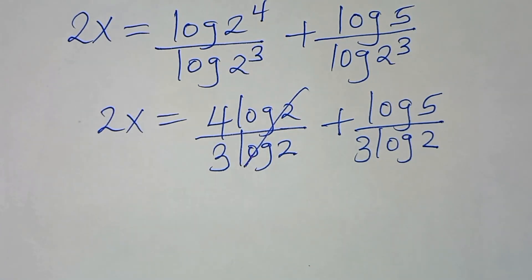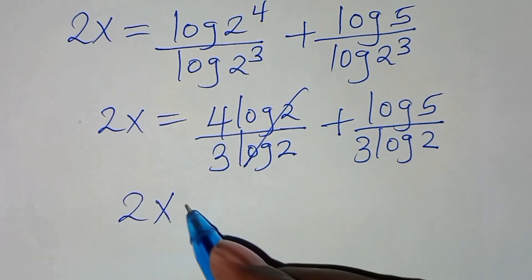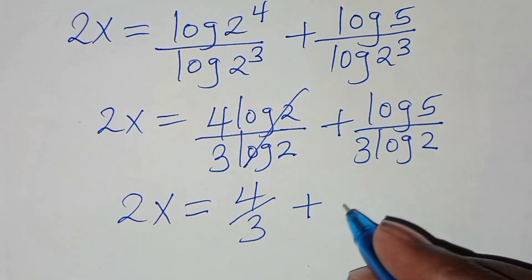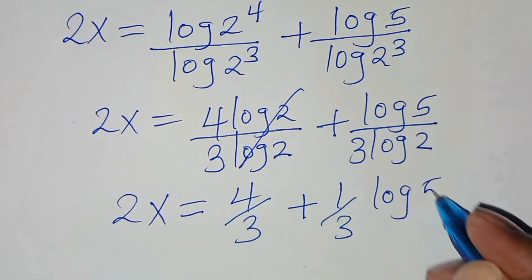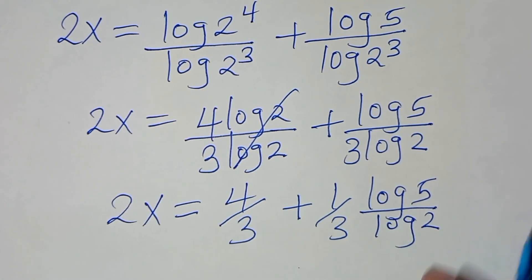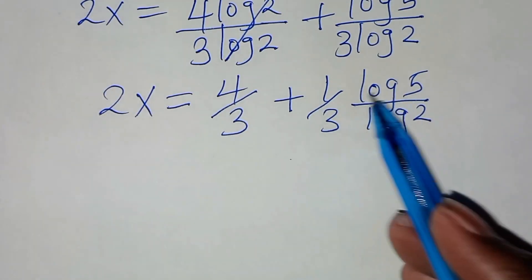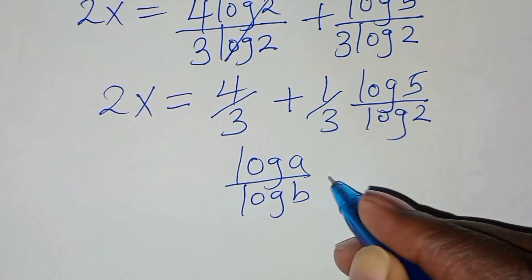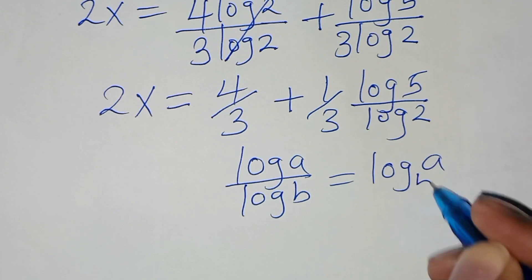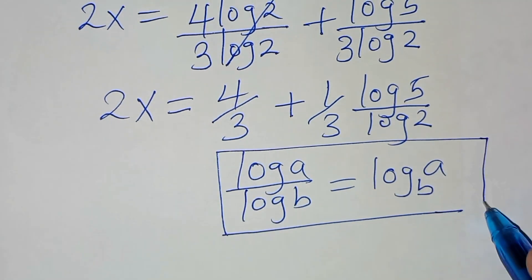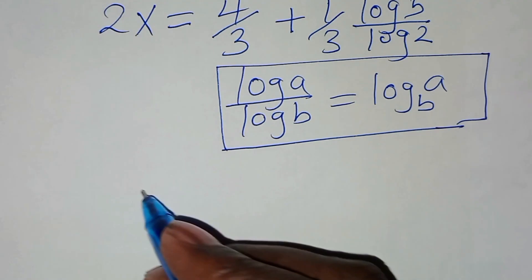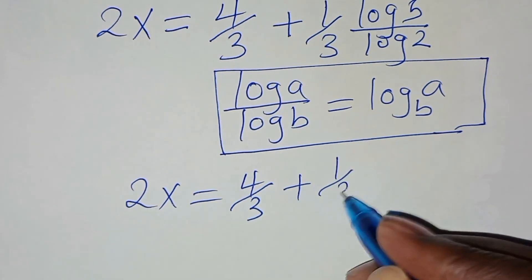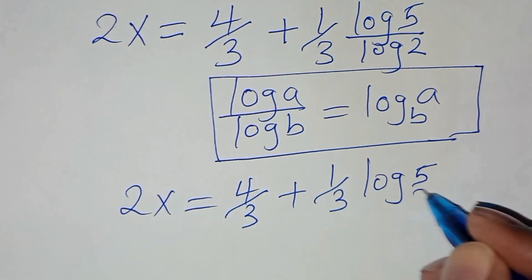So here we have 2x equal to 4/3 plus ln(5) divided by ln(2). Now ln(5) divided by ln(2) is in the form of ln(a) divided by ln(b), which we can express as log base b of a. Applying this change-of-base property, we'll have 2x equal to 4/3 plus (1/3)·log base 2 of 5.